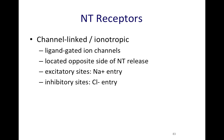Hey everyone, I wanted to talk about different receptors that neurotransmitters use. There are two main types. One is a channel-linked or ionotropic receptor. This is pretty much the same type of receptor that we have talked about before — they're ligand-gated ion channels.